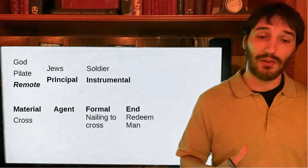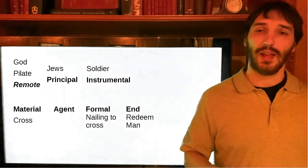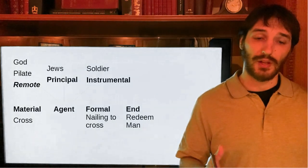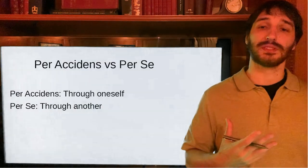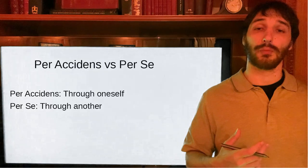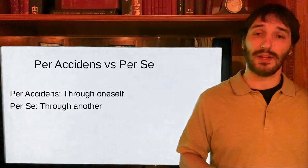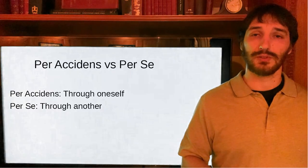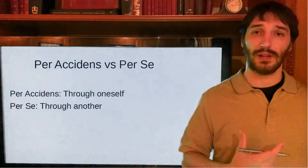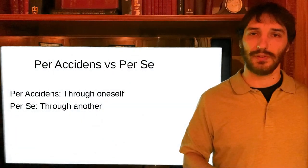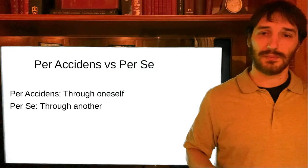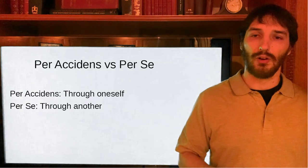We're going to turn to another philosophical tool: the idea of per se and per accidens. It's very simple. Per se is something that is performed through itself, and per accidens is something that is performed through another. It's similar to the distinction between a substance and an accident. A substance has powers and existence through itself, whereas an accident, like blue or softness, does not have existence on its own — it only has existence when it subsists in a substance.